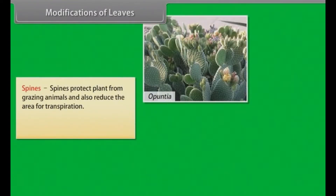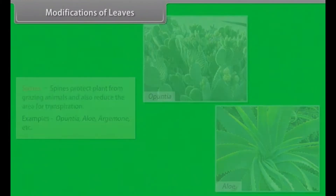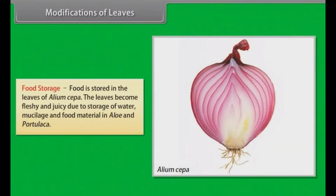Spines protect the plant from grazing animals and also reduce the area of transpiration. Examples: Opuntia, Aloe, Argemone, etc. Food storage: food is stored in the leaves of Allium cepa (onion). The leaves become fleshy and juicy due to storage of water, mucilage and food material, as in Aloe and Portulaca.